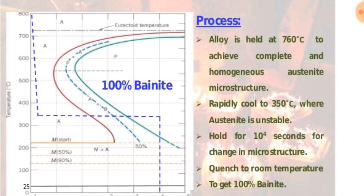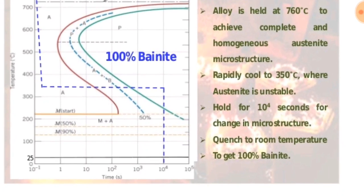Rapidly cool to 350 degrees Celsius where austenite is unstable. Hold for 10^4 seconds for change in microstructure.